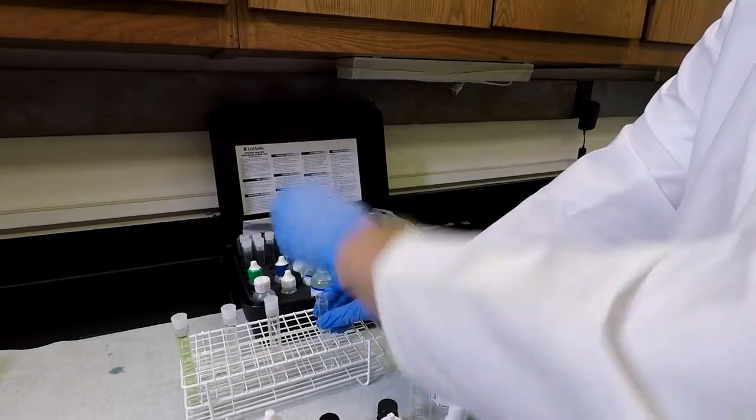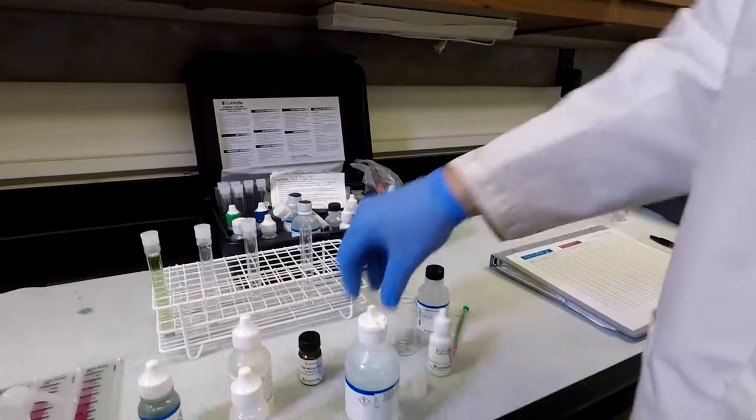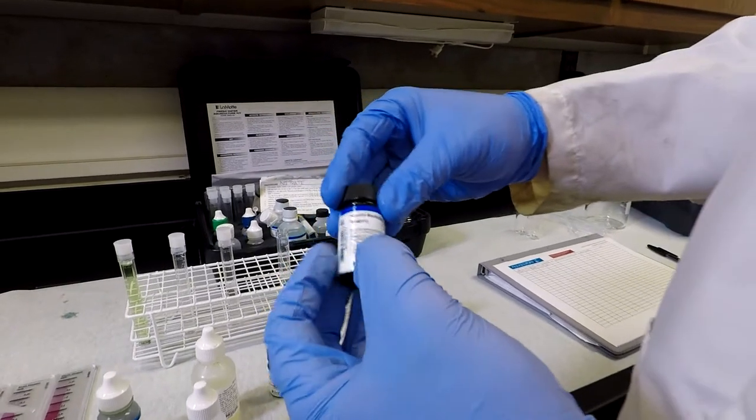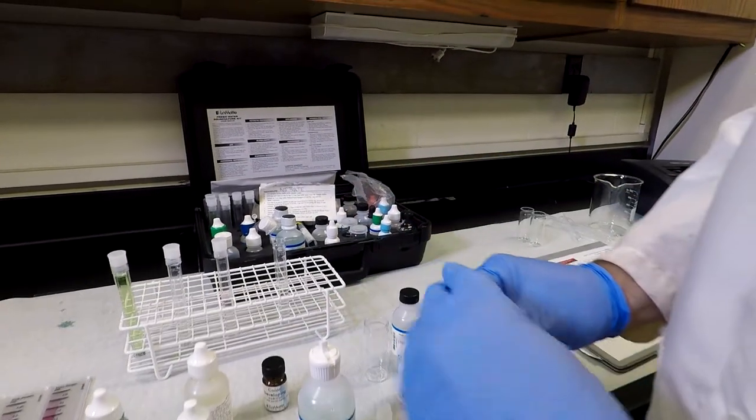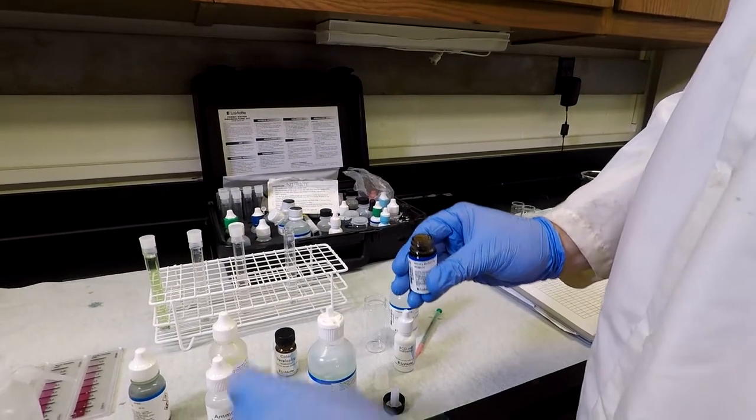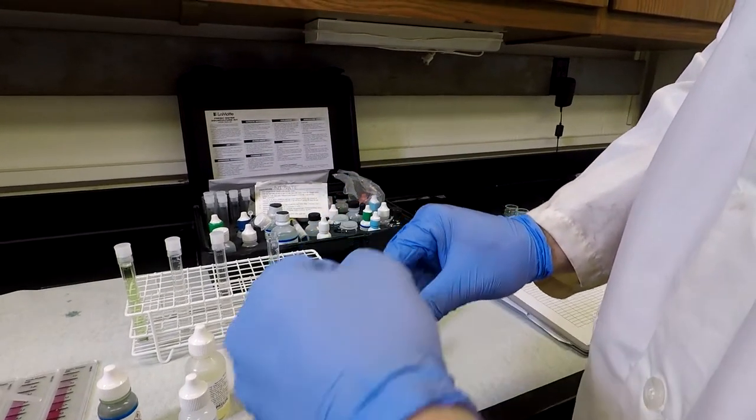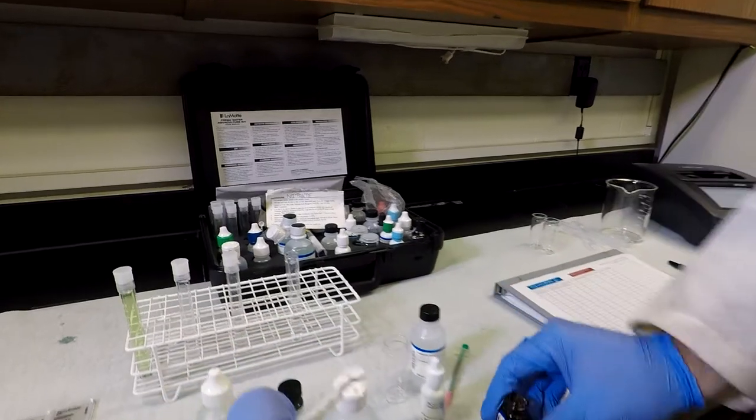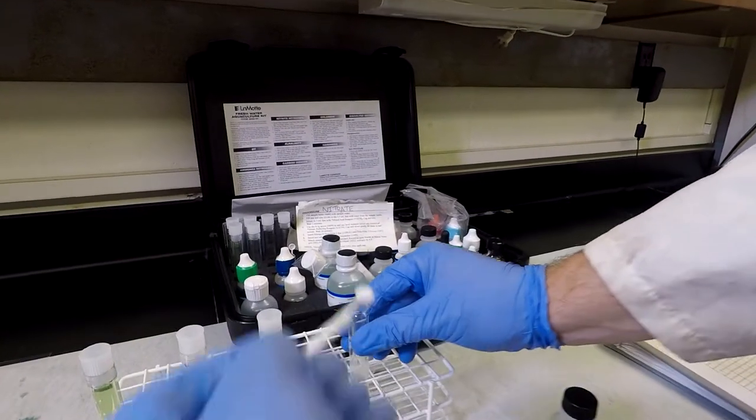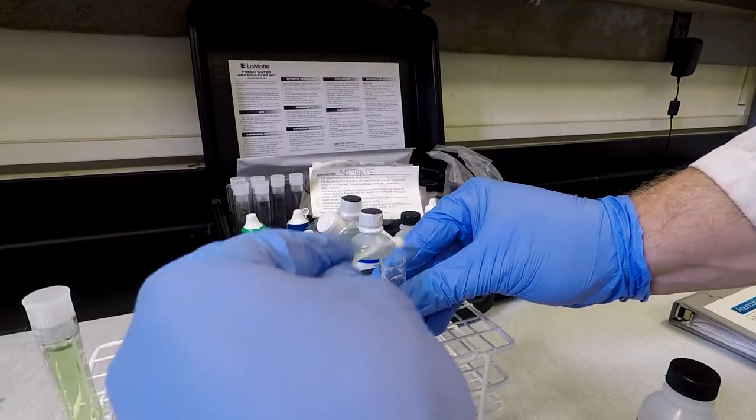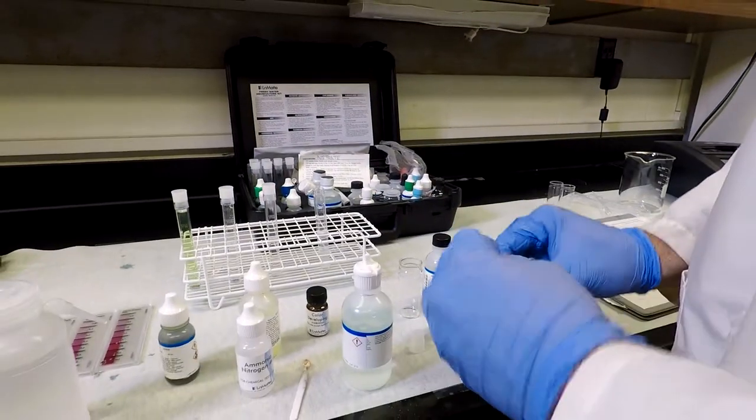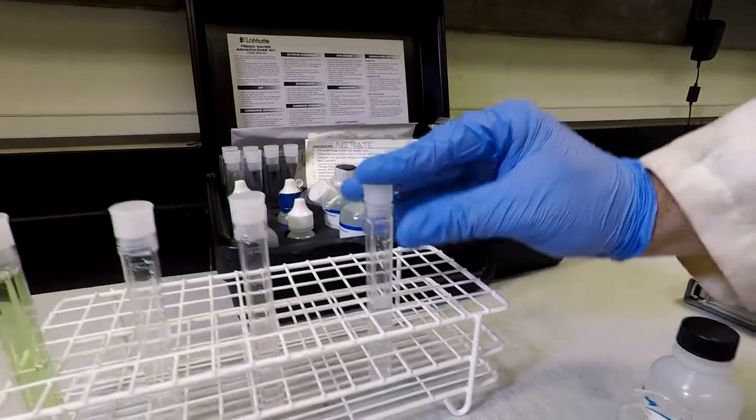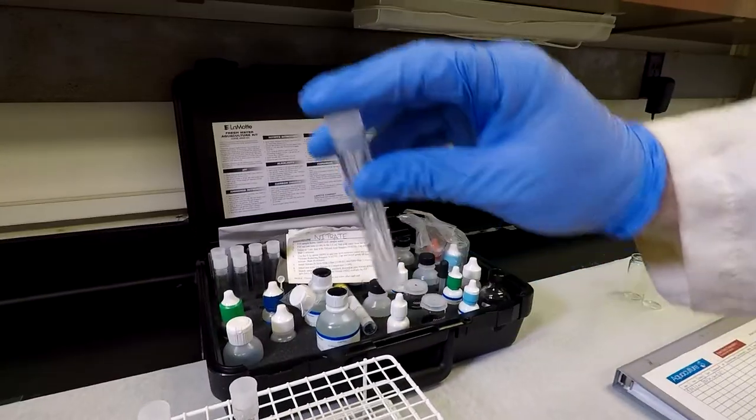Next, we'll take the cap off and we have to add our nitrate reducing reagent. We'll get a little scoop of this using that 0.1 gram scoop and then we'll dump that right into our sample. Once we've done this, put this cap on, mix the sample up.